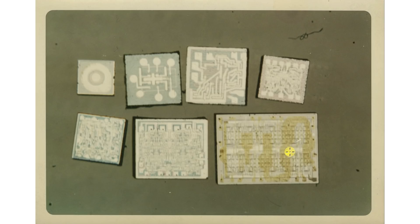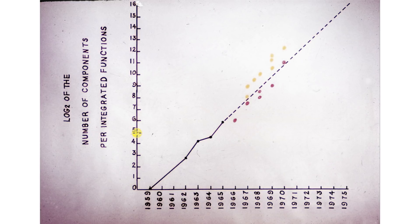About the time that this integrated circuit was made, around 1965, Gordon Moore had been watching what was happening. And he made a plot of the number of transistors on a single piece of silicon as a function of the year. And we're up here somewhere by 1965.